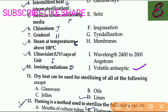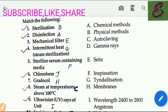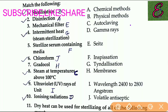Question number six: chloroform — the answer is volatile antiseptic. Question number seven: gradochol — the answer is membrane filter. Question number eight: steam at temperatures above 100 degrees Celsius — the answer is autoclaving.